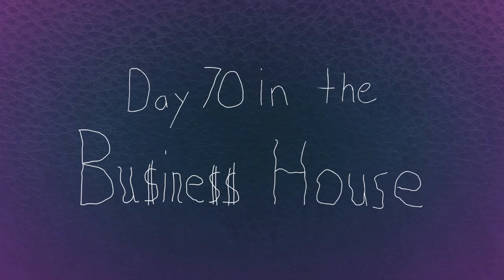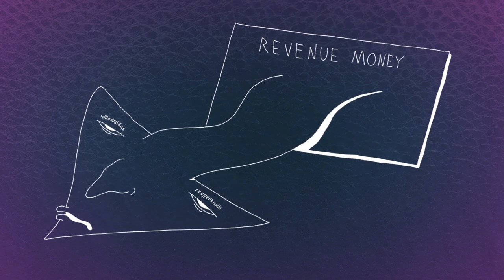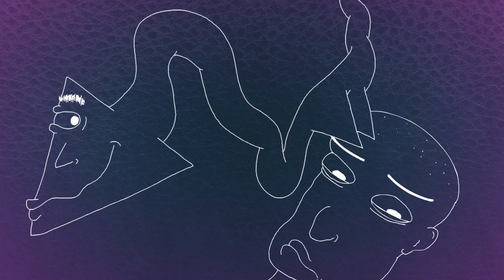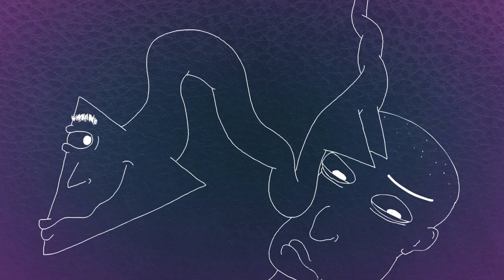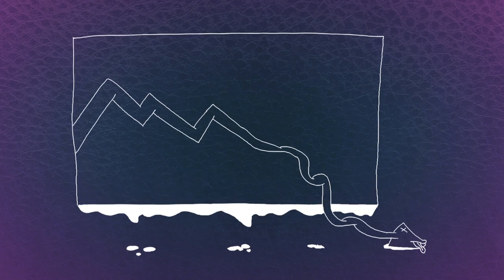Day 70 in the business house. The company is heading to financial ruin. I'm trying not to freak out, but all the downward arrows keep putting their pointy butts on my squishy face. Day 71 in the business house.